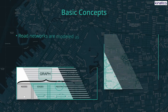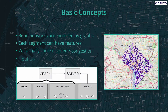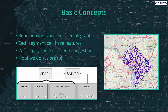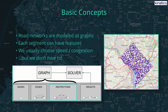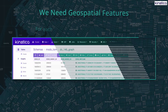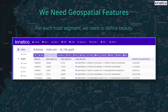GPS navigation is just optimization of graphs representing road networks. Roads are split into many segments, each with speed or congestion data on them. We have nodes, edges, restrictions, and weights. Here we see a typical graph setup with road speed as the primary feature.